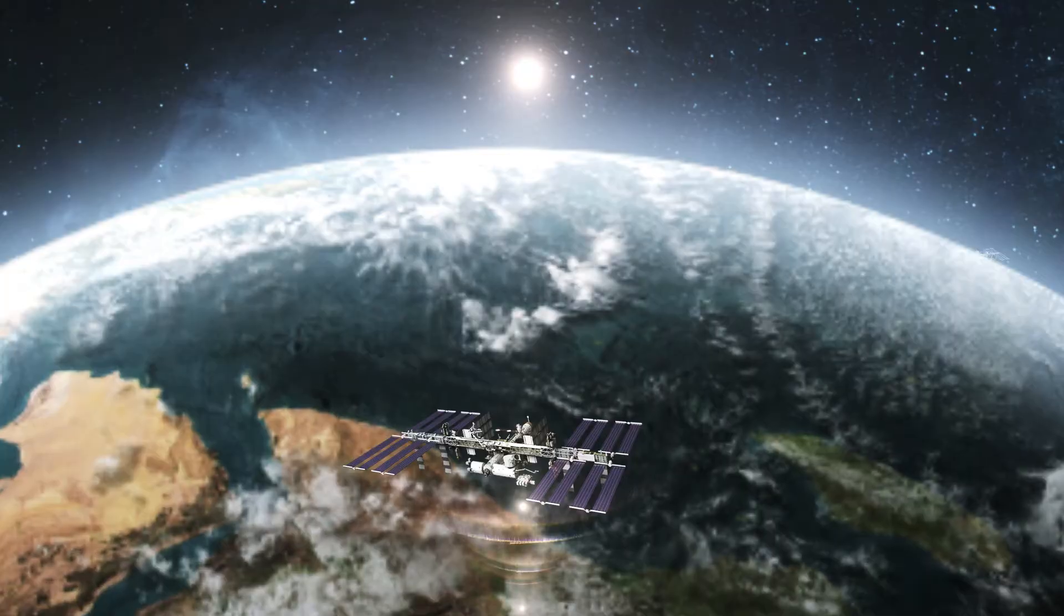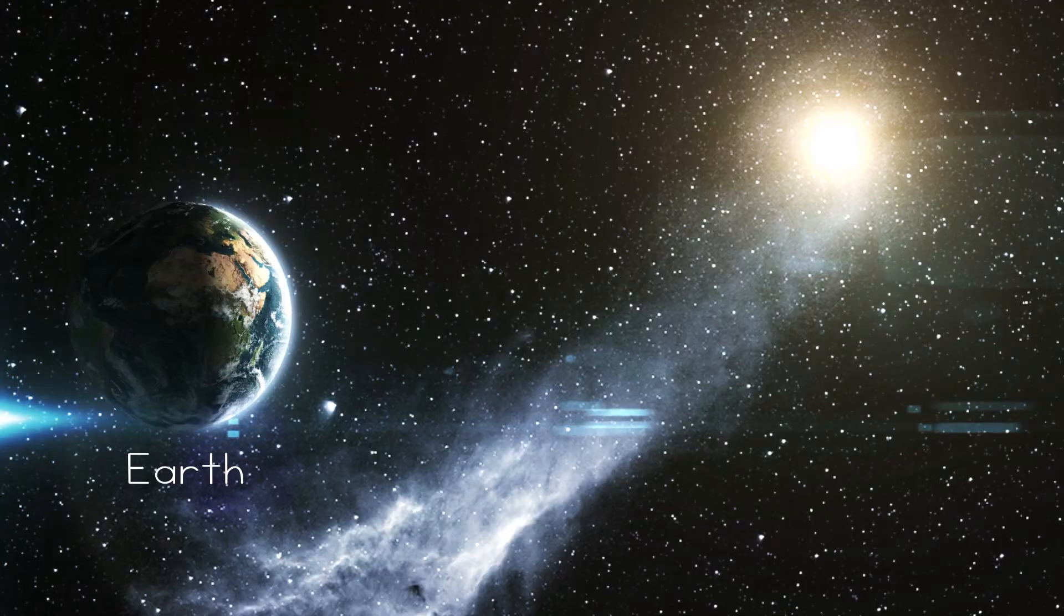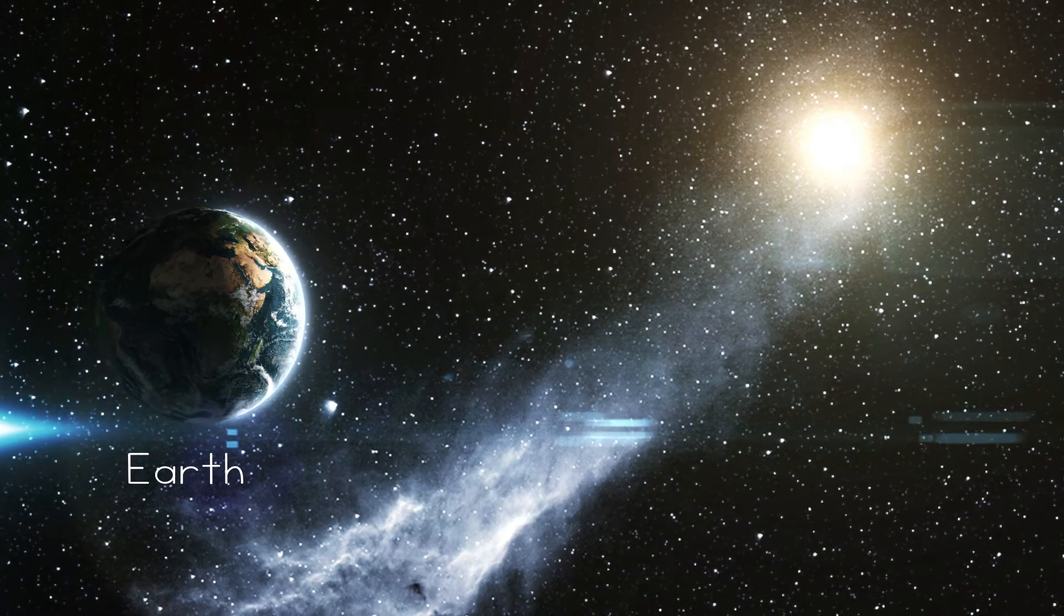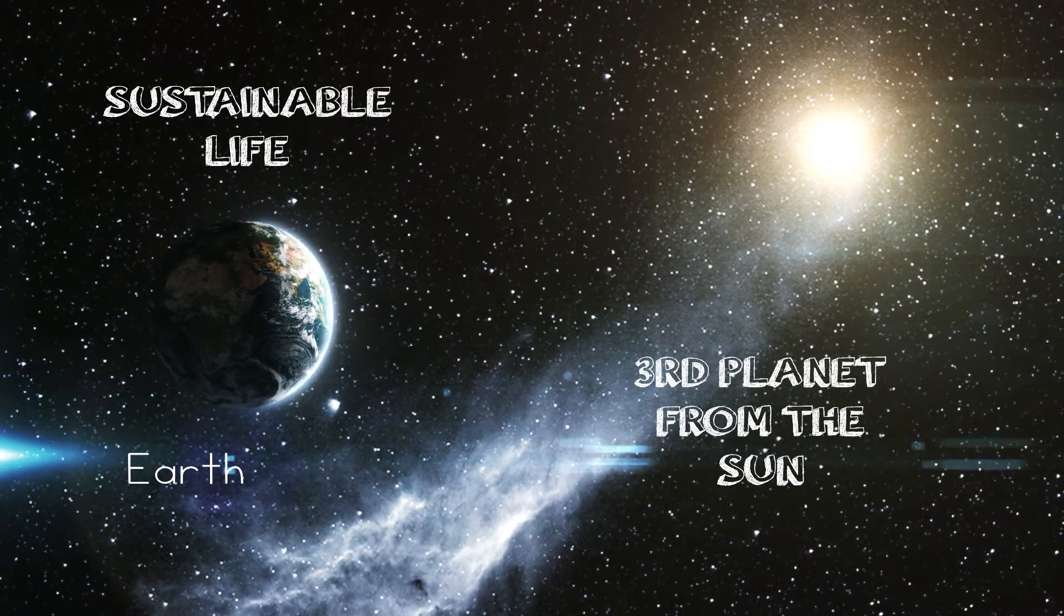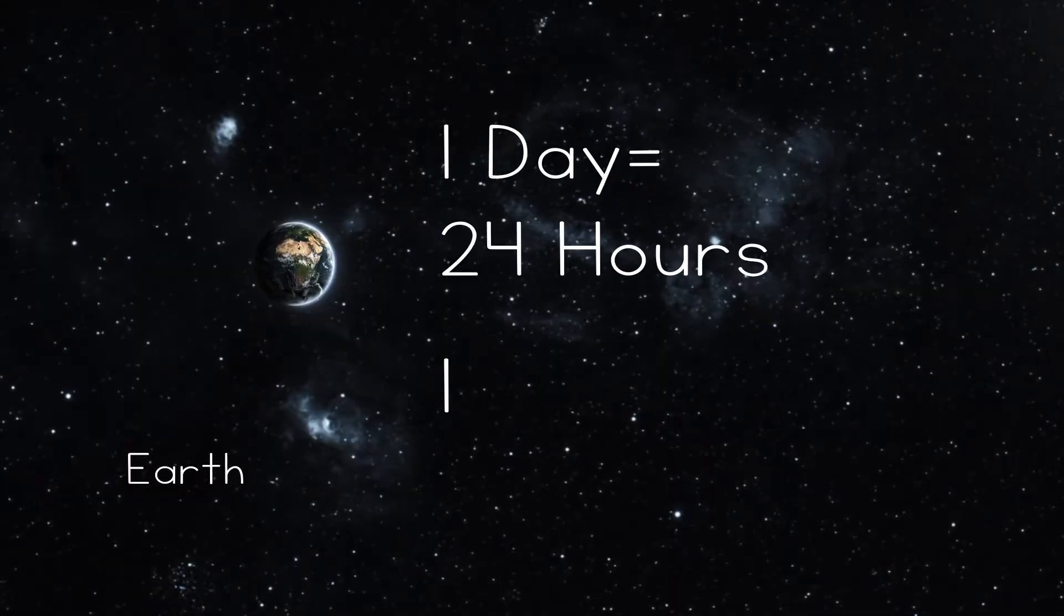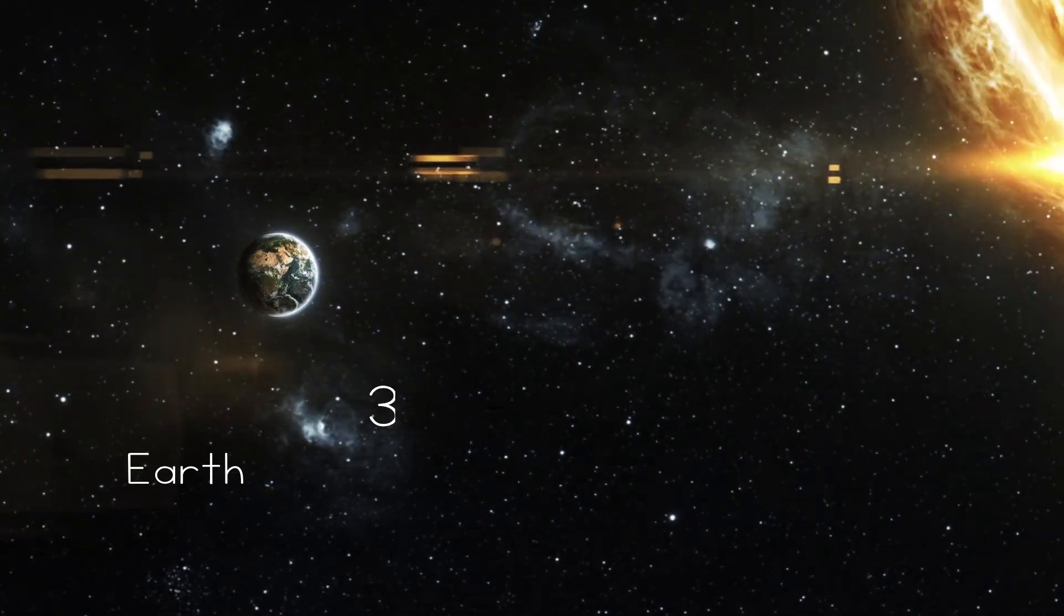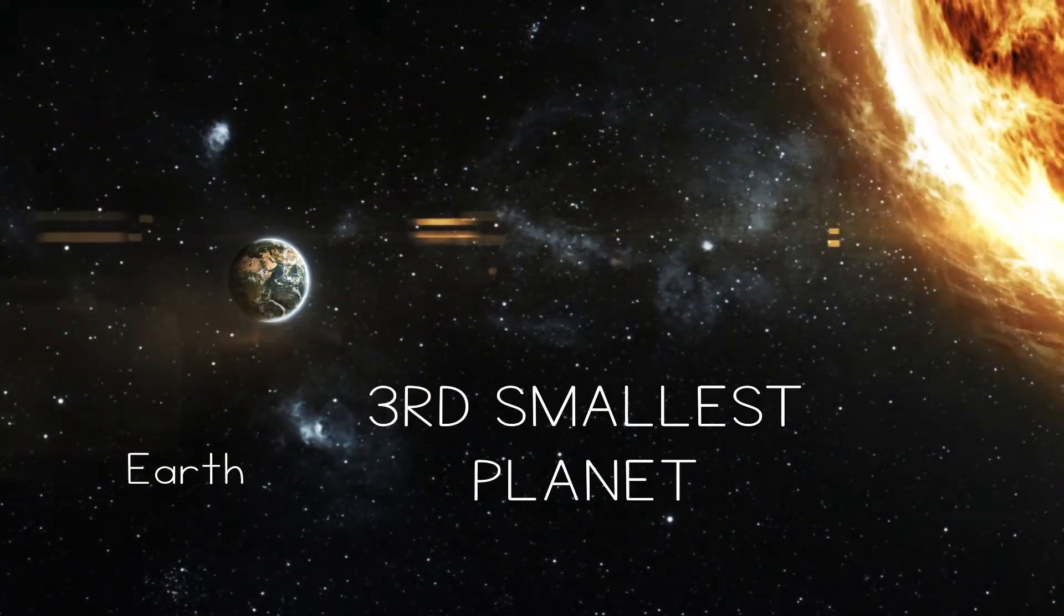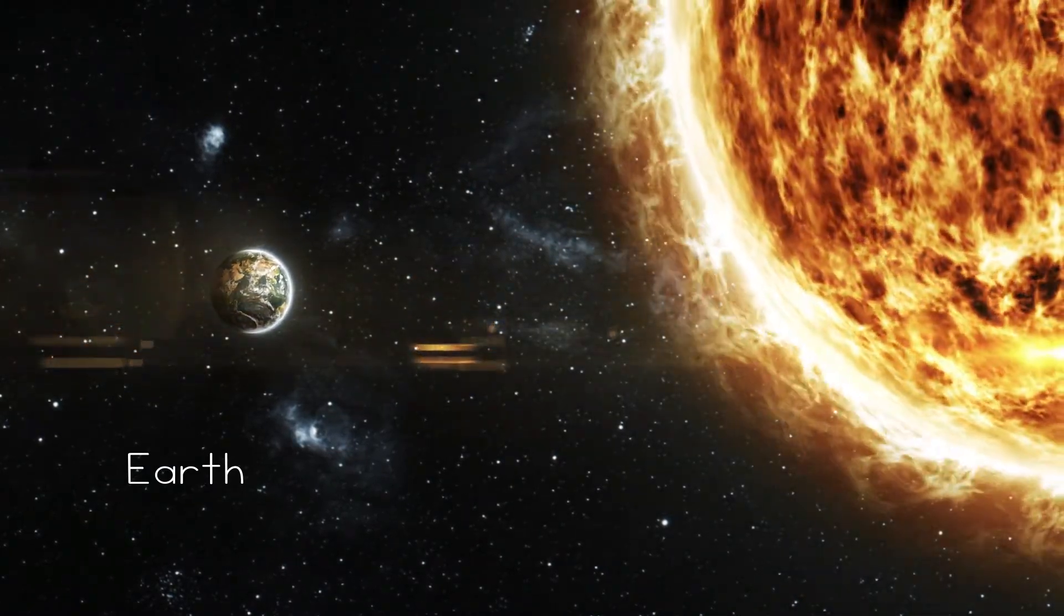It sure has. Now, let's look at Earth. Oh, I know this one. We are the third planet from the sun, and the only planet in our solar system to have known living things. One day is 24 hours, and one year is 365 days. We are the third smallest planet. If the sun is the size of a basketball, Earth is the size of a grain of sand.